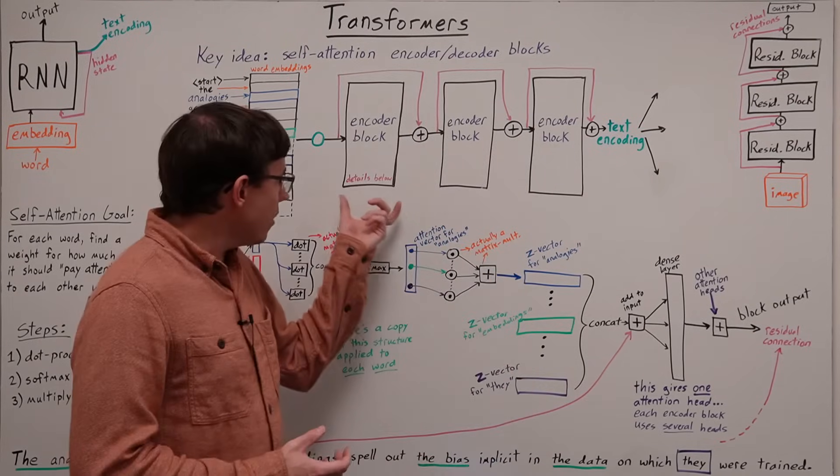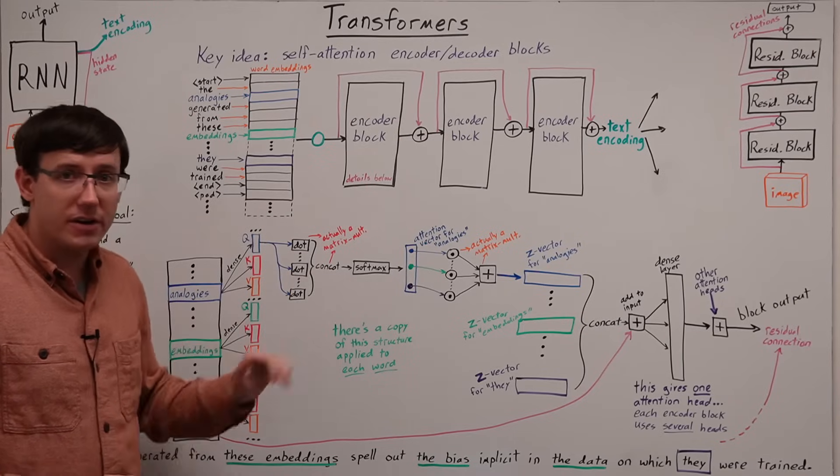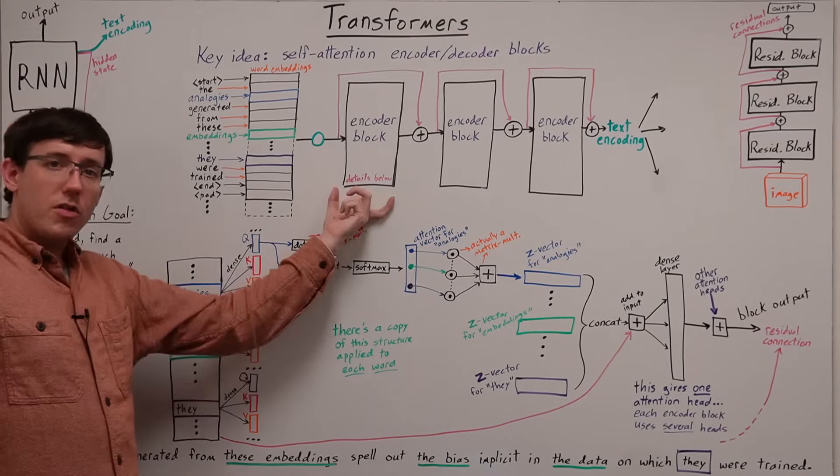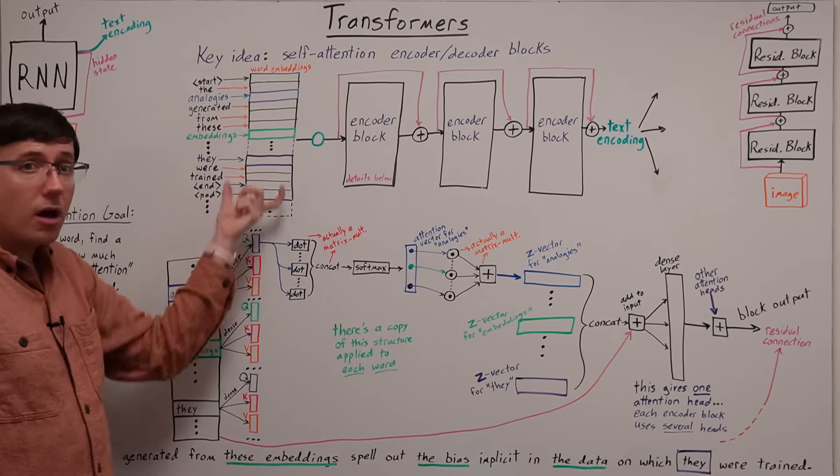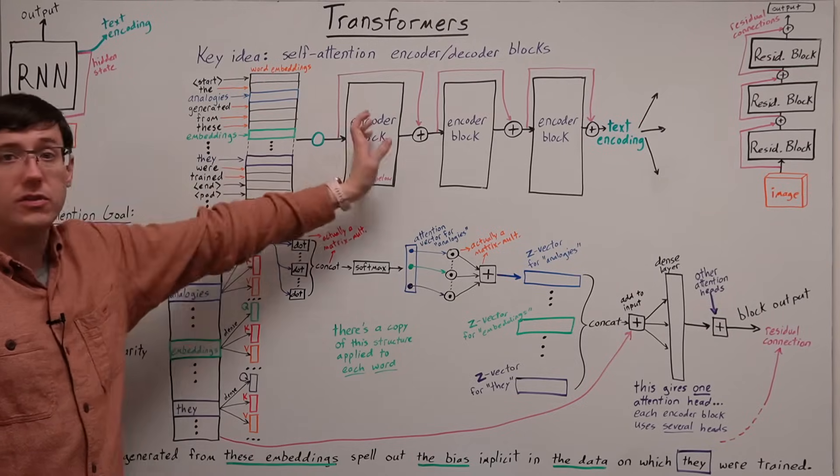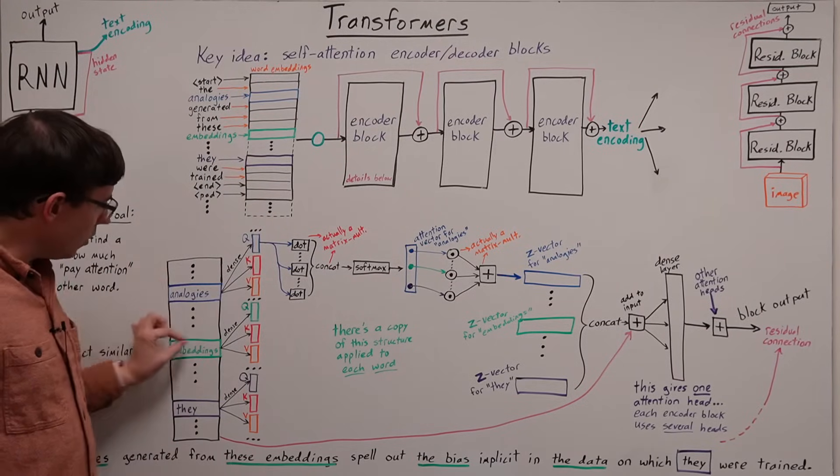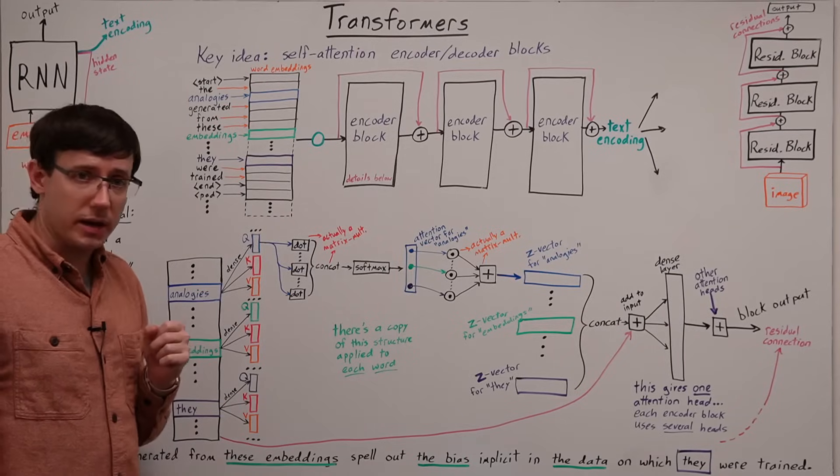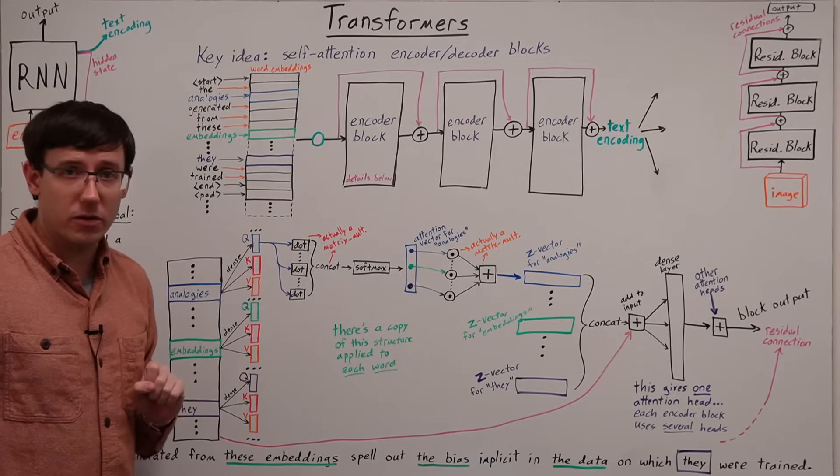So, let's think about the architecture within the first of these self-attention encoder blocks. The first block in the network receives all of the word embeddings as its input, and for each of those words for which it has an embedding, it computes three different dense layers.